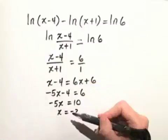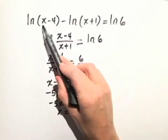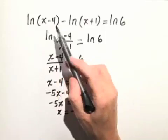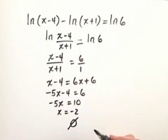So notice, if we substitute -2 back into x-4, we get -6. That's not in the domain. Therefore, x equals -2 is not a solution, giving us the empty set.